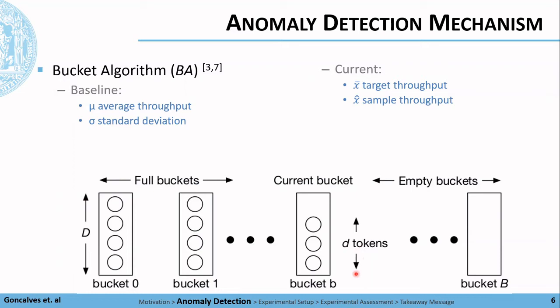Notice that the lower case notation represents the current bucket and the current number of tokens in the current bucket. The target throughput is a function of the baseline metrics and the number of filled buckets. Tokens are added to our system as the algorithm processes the current system metrics. A token is inserted in the bucket if the current sample throughput is lower than the target throughput. Otherwise, the token is removed.